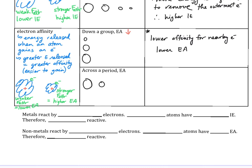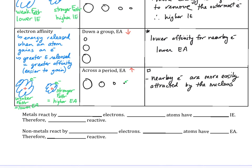Moving across the period, the atoms are getting smaller, so nearby electrons are actually closer to the nucleus. The atom's ability to gain electrons is increasing — electron affinity increases as we move across the period. Increased nuclear charge leads to a stronger force of attraction, making for a smaller atom, and therefore nearby electrons are more easily attracted by the nucleus. These are the key points summarized in the table.